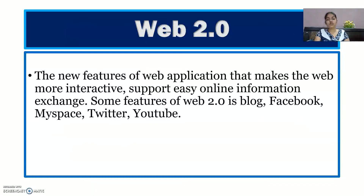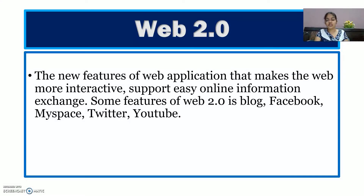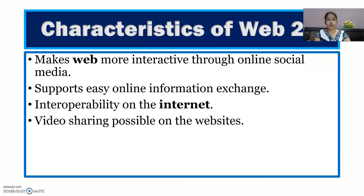Next is Web 2.0. This topic also appears in exam questions — what are the characteristics of Web 2.0? Web 2.0 is a new feature of web applications that describes how the worldwide web has been made more interactive and how we can easily share information online. Examples include YouTube, Twitter, MySpace, and Facebook. It makes the web more interactive through online social media, allowing us to easily exchange information and enabling video sharing.